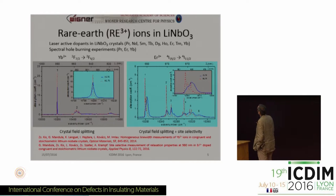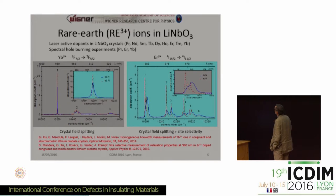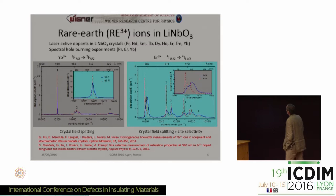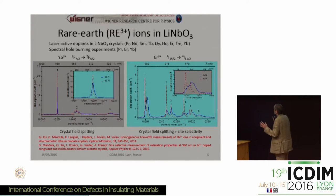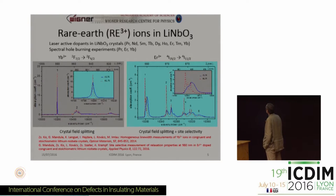Here I compare again the properties of the absorption lines of ytterbium in congruent and stoichiometric crystal, and again we see that in the stoichiometric crystal, the absorption bands related to these electronic transitions are much sharper. And the same for erbium — we have the crystal field components 1, 2, 3, 4, 5, 6. In addition, we have additional splitting which are related to the so-called site selectivity. So we have different surroundings around erbium ions, and that's the reason why we see additional lines.